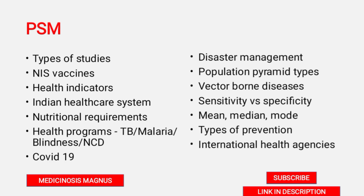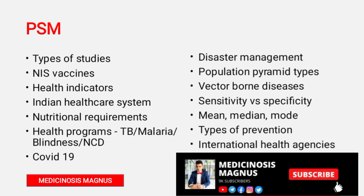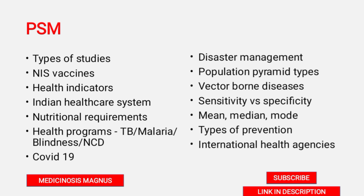Coming to PSM: know about the types of studies — epidemiological study, case control study, cohort study, ecological study — and know how to identify them in a case-based question. National immunization schedule, vaccines, and health indicators are very important. Also know about the Indian healthcare system — ASHA, primary healthcare center, sub center.